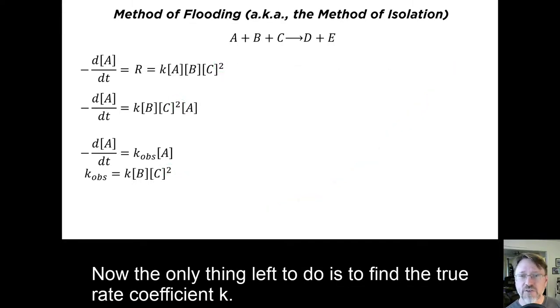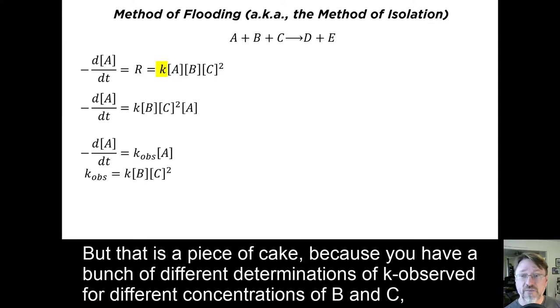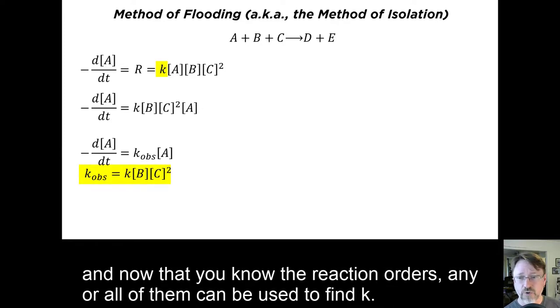Now the only thing left to do is to find the true rate coefficient, K. But that is a piece of cake, because you have a bunch of different determinations of K observed for different concentrations of B and C. And now that you know the reaction orders, any or all of them can be used to find K.